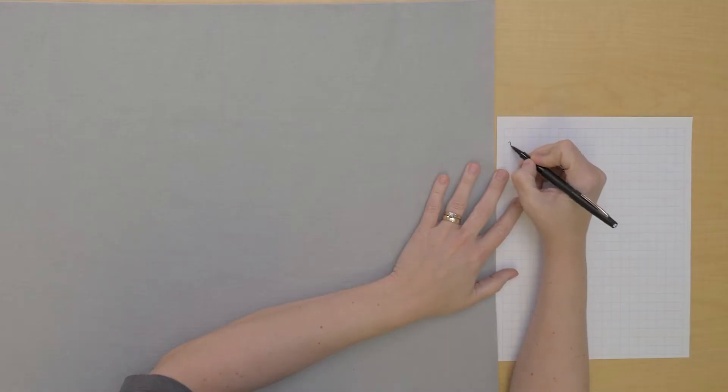Today we're going to find the square root of some larger numbers. We're going to find the square root of 576. So I'm going to build that with my golden beads.